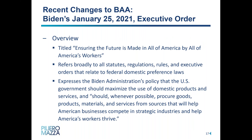Biden's January 2021 executive order, titled Ensuring the Future is Made in All of America by All of America's Workers, refers broadly to all statutes, regulations, rules, and executive orders that relate to federal domestic preference laws generally. It expresses the Biden administration's policy that the U.S. government should maximize the use of domestic products and services and should, quote, whenever possible, procure goods, products, materials, and services from sources that will help American businesses compete in strategic industries and help America's workers thrive.